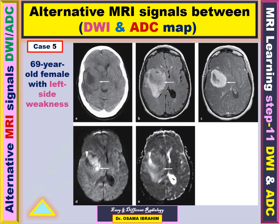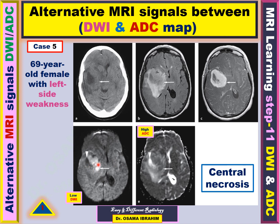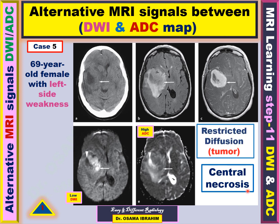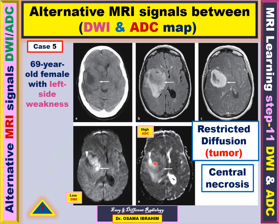The last case is a 69-year-old female with left-side weakness. We should detect the diffusion-weighted image and ADC and their signals. This area marked with an arrowhead appeared as low signal in the diffusion-weighted image and high signal in the ADC map — this is considered central necrosis. The signal in diffusion is similar to CSF in the ventricle and the signal in ADC is also similar to CSF, so it is considered fluid within the lesion mass, representing central necrosis.